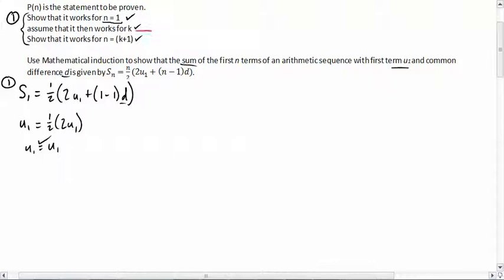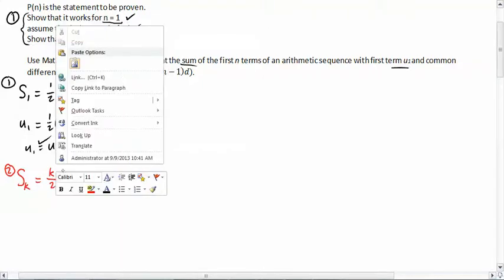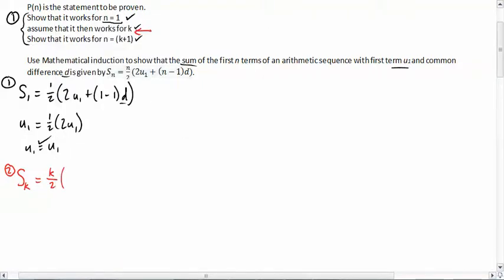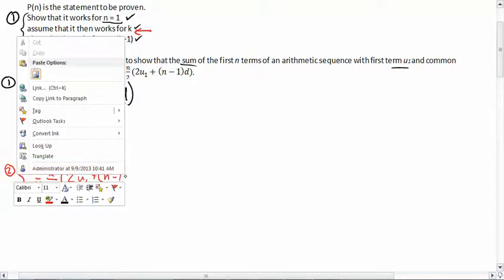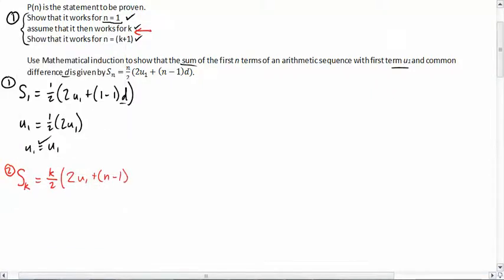So second, we're going to assume that it works for k. Now what that means is that we're just going to write it down. We're going to say s of k equals k over 2, 2u1 plus k minus 1 times d. Once we've got this, then we are ready for step 3.